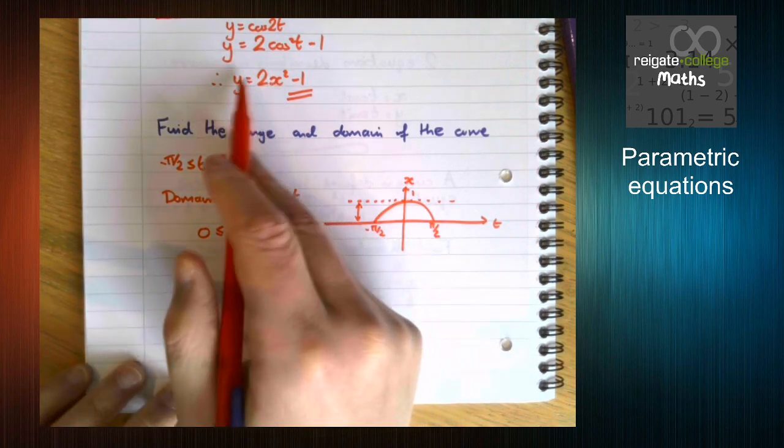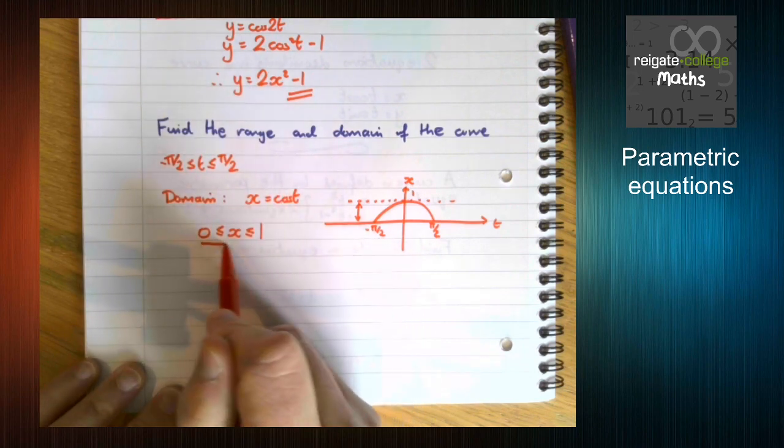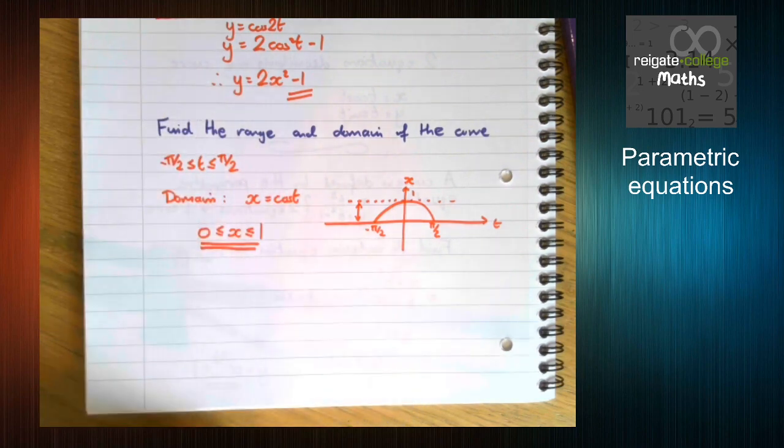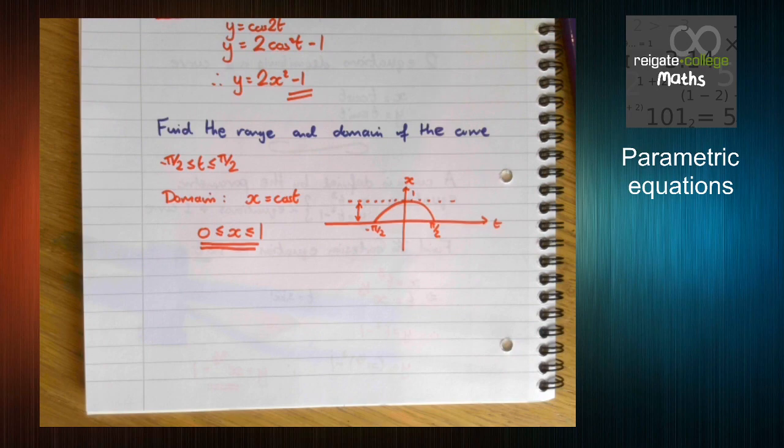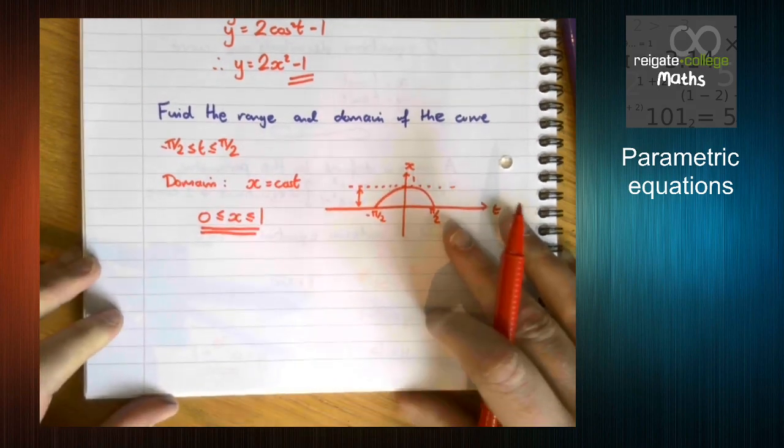So the values of x for this set of values of t is anything between 0 and 1. So the domain of this function is x is between 0 and 1. And we can do the range in the same way.